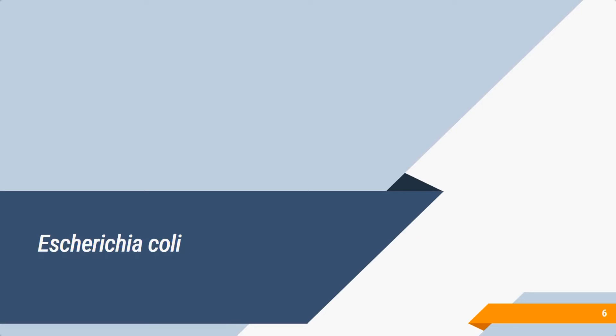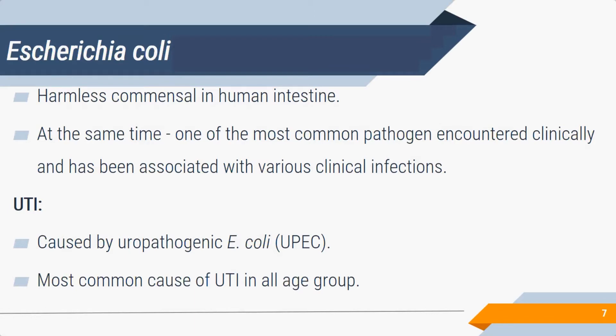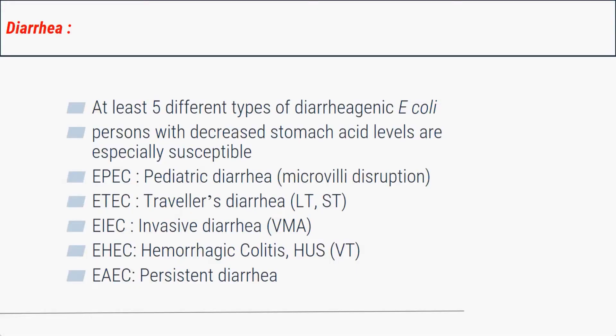The first important bacterium is Escherichia coli. It is usually a harmless commensal in the human intestine but is also one of the most common pathogens encountered clinically, causing mainly urinary tract infection, diarrhea, septicemia, meningitis, and pyogenic infections. The UTI-causing E. coli are known as UPEC — uropathogenic E. coli — and they bind to P receptors on uroepithelial cells, making them the most common cause of UTI across all age groups in community settings.